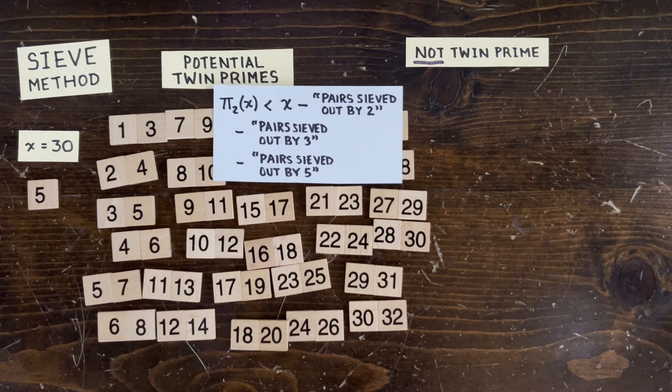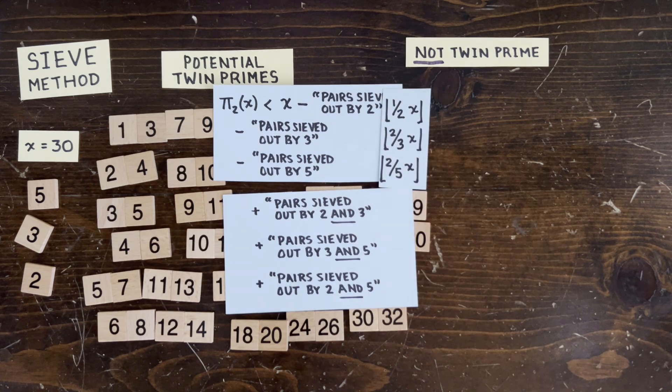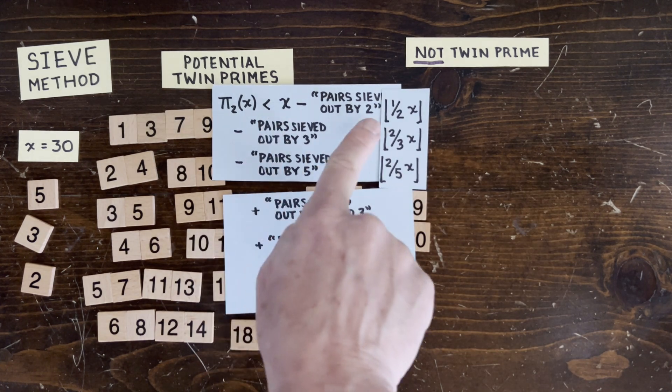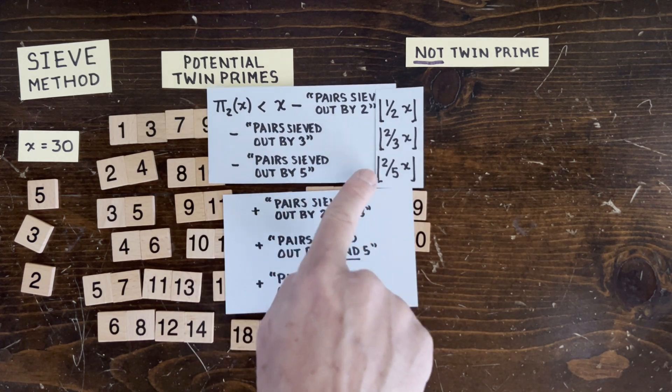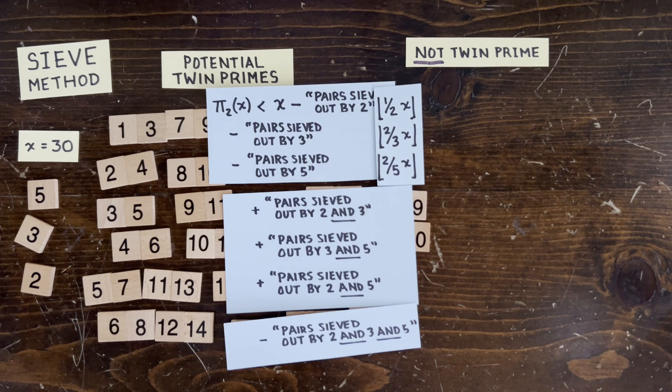Now, what if we sieve using 2, 3, and 5? Then remaining, we should have X minus half of X minus two-thirds of X minus two-fifths of X. But that's less than zero remaining. Okay, so we accidentally sieved out some of the pairs twice or even three times. So we have to adjust for overcounting like this.